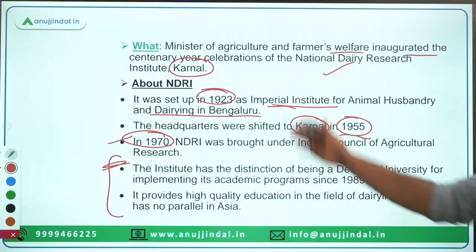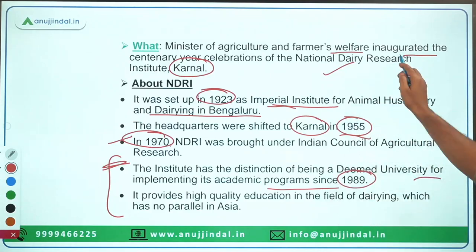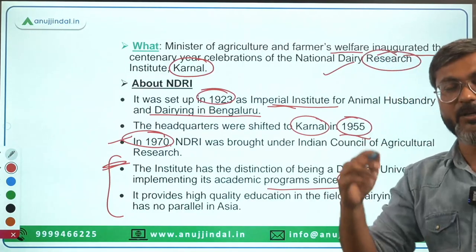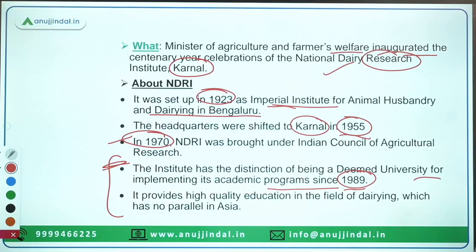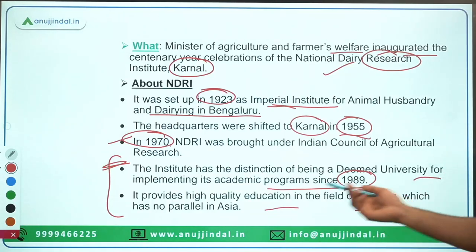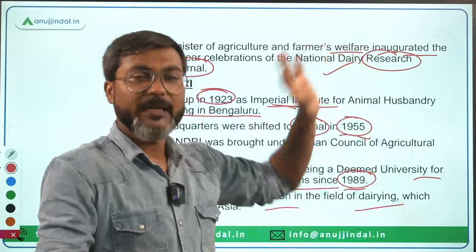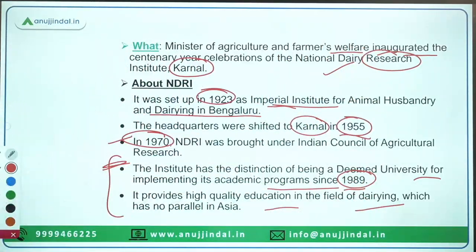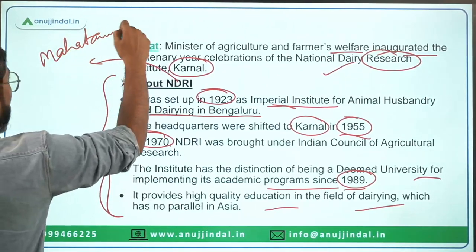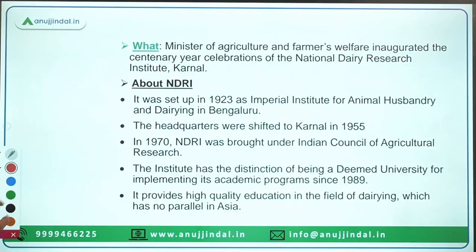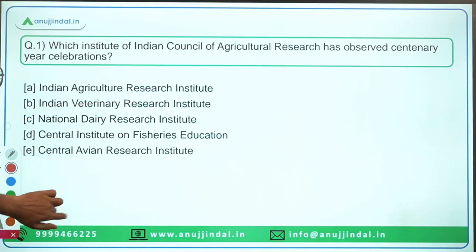NDRI has the distinction of being a deemed university along with being a research institution, implementing its academic programs since 1989. It provides high-quality education in the field of dairying which has no parallel in Asia. Interestingly, Mahatma Gandhi also took training at this institute. Therefore, the correct answer is option C — National Dairy Research Institute.